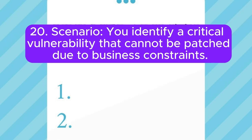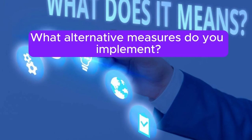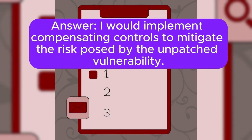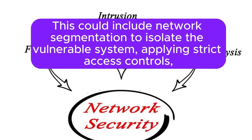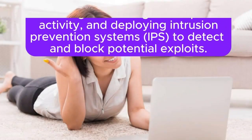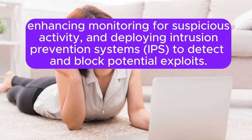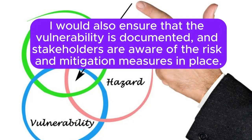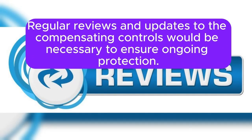Scenario 20: You identify a critical vulnerability that cannot be patched due to business constraints. What alternative measures do you implement? I would implement compensating controls to mitigate the risk posed by the unpatched vulnerability. This could include network segmentation to isolate the vulnerable system, applying strict access controls, enhancing monitoring for suspicious activity, and deploying intrusion prevention systems (IPS) to detect and block potential exploits. I would also ensure that the vulnerability is documented and stakeholders are aware of the risk and mitigation measures in place. Regular reviews and updates to the compensating controls would be necessary to ensure ongoing protection.